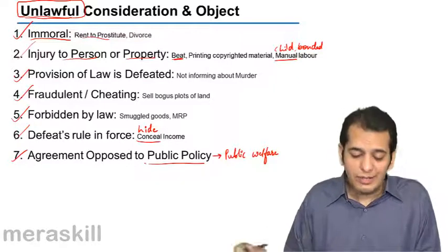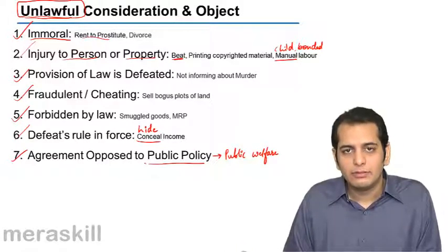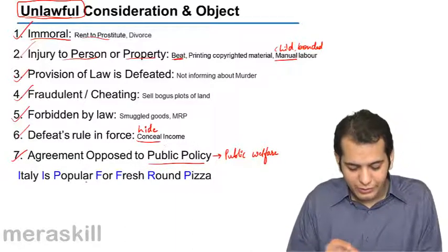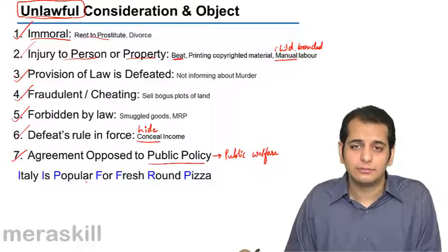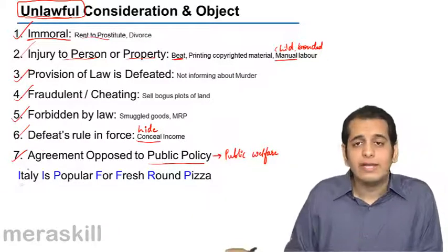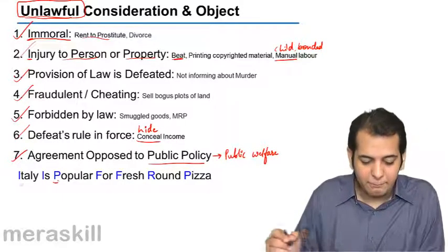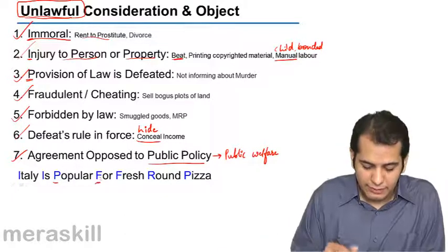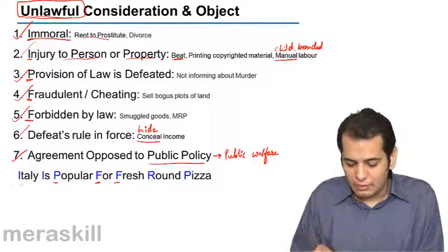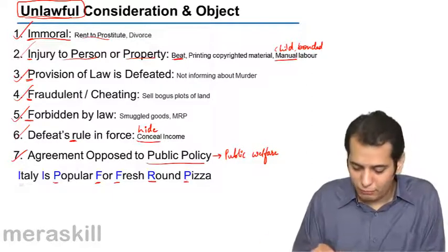To help you remember these points pretty easily, we have come up with a mnemonic or an acronym: 'Italy is popular for fresh round pizza.' The I of Italy is for immoral, the I of 'is' is for injury, P for provision, F for fraudulent, the next F of 'fresh' for forbidden, R of 'round' for rule, and P of 'pizza' for public policy.